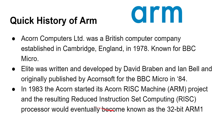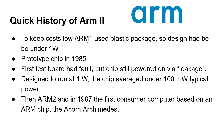Acorn was in Cambridge, and ARM's headquarters today are still in Cambridge. To keep costs low for the ARM1, the packaging around the chip was made of plastic, which means the chip had to draw under one watt of power to not affect the plastic. The prototype chip came out in 1985. When they got the first chip back from the manufacturer, the test board had a fault — there wasn't any power being supplied to the power rails. However, the chip still booted up and ran just from the leakage on the other pins, and they found it ran at under 100 milliwatts during typical usage.